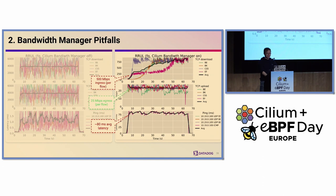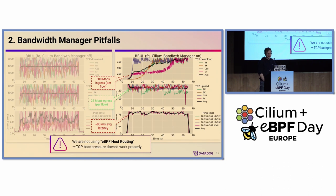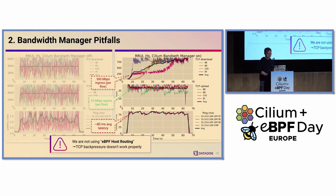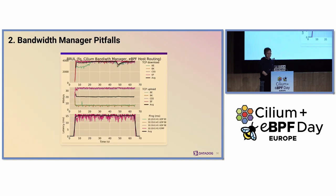When we investigated this issue, we realized that we had not enabled the BPF host routing feature that was added in Cilium 1.9. Generally, this is much faster than the legacy routing that Cilium does because it bypasses iptables and the upper network stack in the host namespace, and it also ensures that TCP backpressure works properly. We enabled this feature and the results were much better.